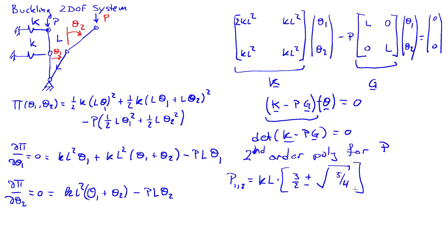That gives us our critical load. Those are the two eigenvalues, but the critical load is the minimum of these two, which will be the one with the minus sign. So P_cr = K L (3/2 - √(5/4)).